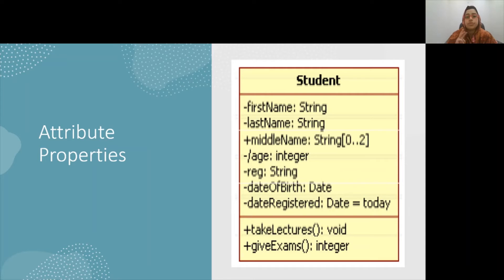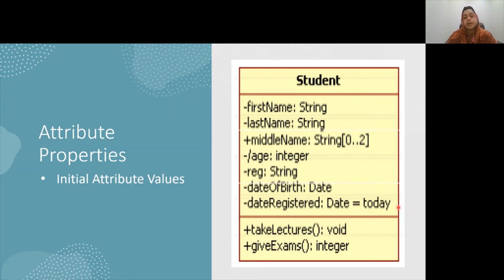Attributes can have three different types of properties. The first is the initial attribute value. The initial value attribute is an attribute property in which an attribute is set with an initial value. The initial value for an attribute can be specified as part of the class diagram by including the clause equals and giving the initial value after the attribute type. So here, dateRegister has a type of Date and its default value is the current date.